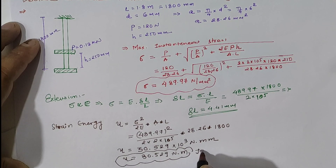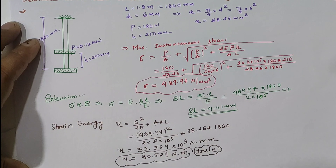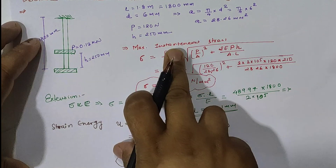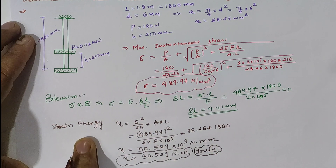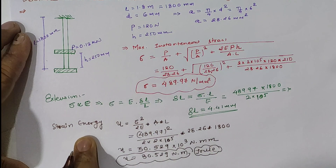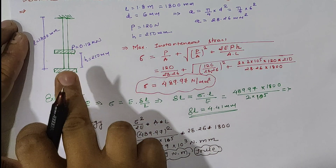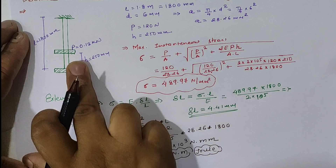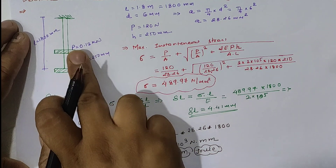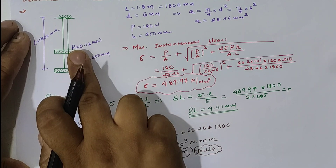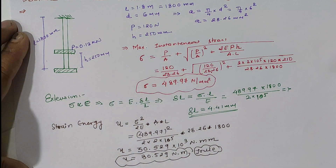The energy stored value is 30.529 N·m, which we can express in joules. Thus we can calculate the maximum stress, extension, and strain energy for a given collar having a falling height of 250 mm and collar weight of 0.12 kilonewton. Thank you.